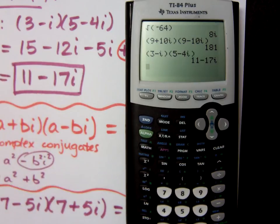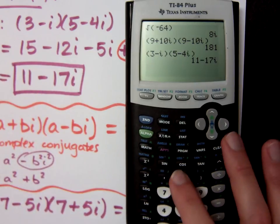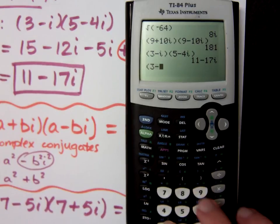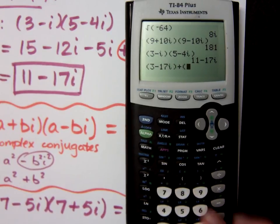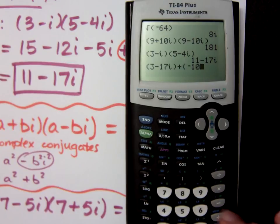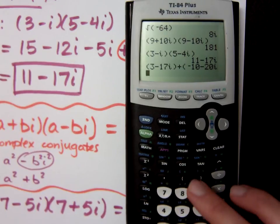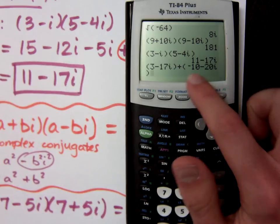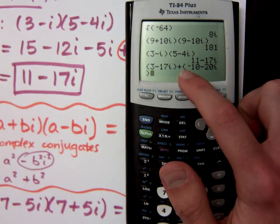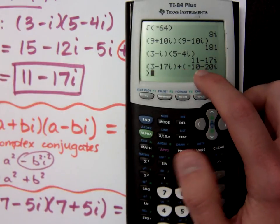Even the ones that were on the other video. If you want to add these, we saw we had 3 minus 17i plus negative 10 minus 20i. Please be very careful that you know the difference between a negative and subtraction.